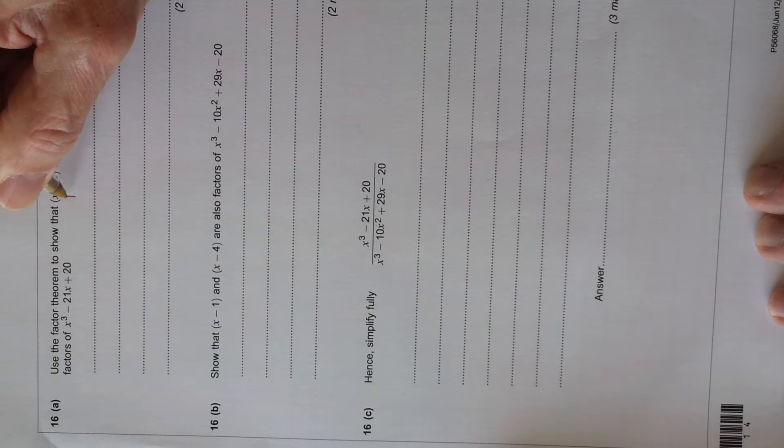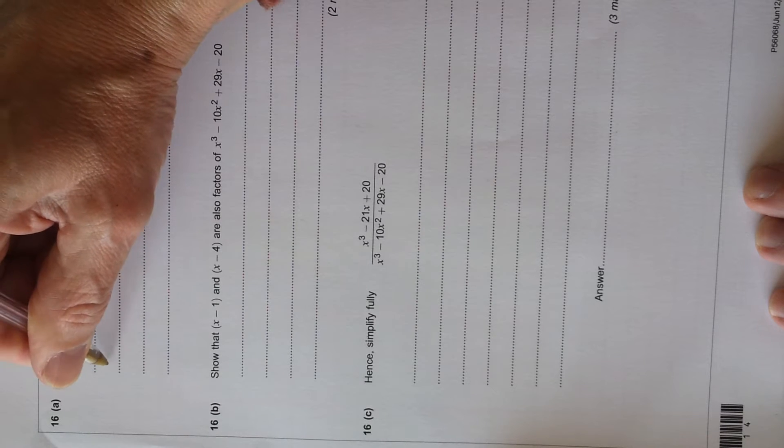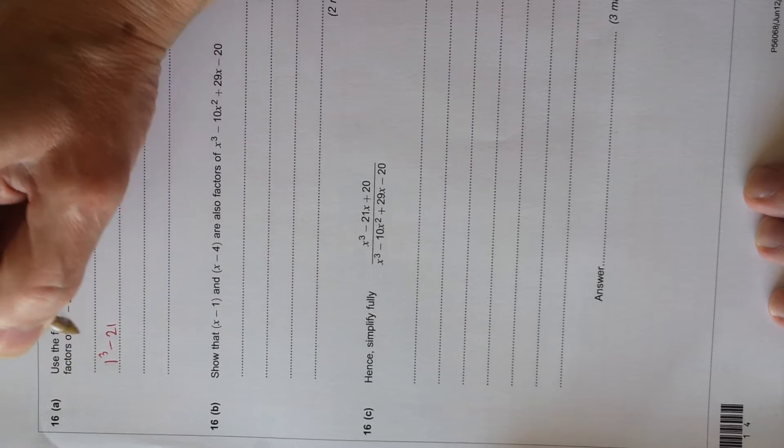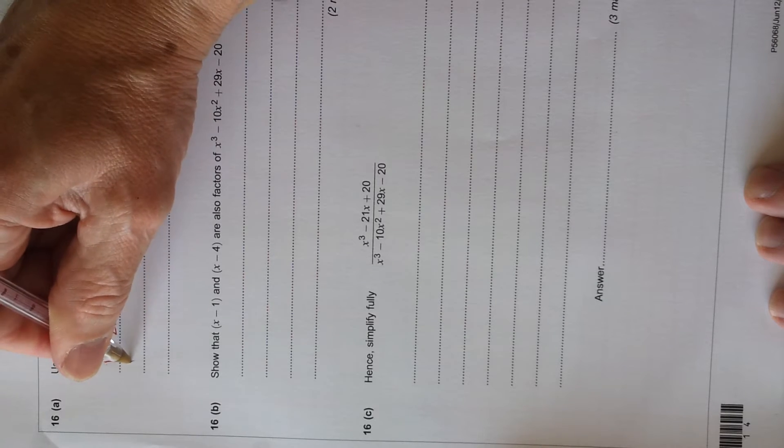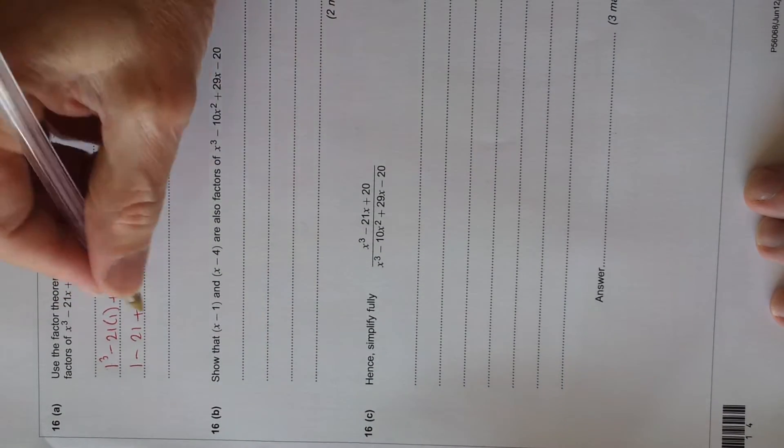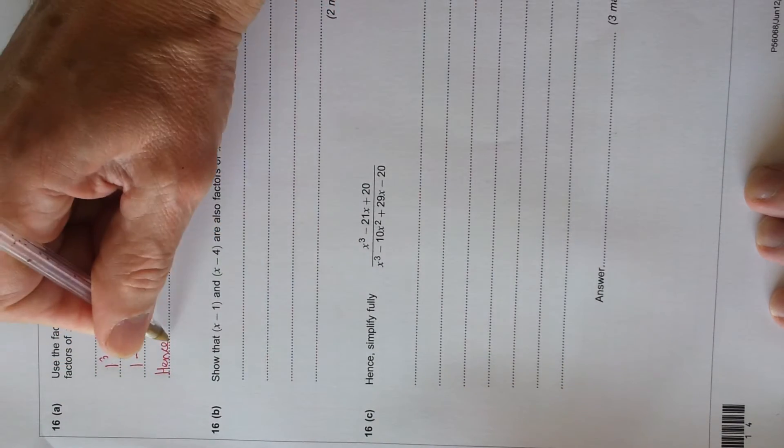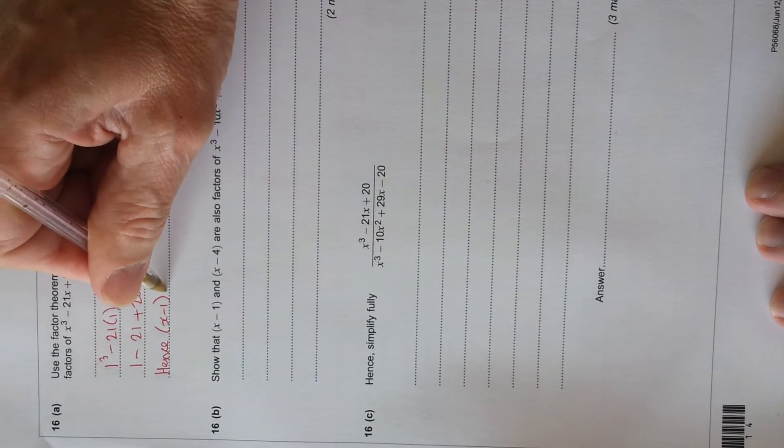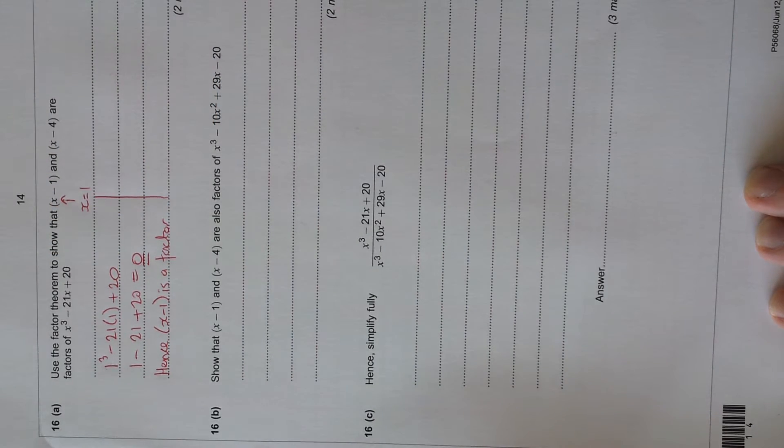If x minus 1 is a factor, then x must equal 1. So let's put that in and see. 1 cubed minus 21 times 1 plus 20. That's 1 minus 21 plus 20. That equals 0, which is correct if it's a factor. We've got to get a value of 0. That means there's no remainder. And you should finish off by saying, hence, x minus 1 is a factor. And certainly at A level, you must say that to gain the last mark.